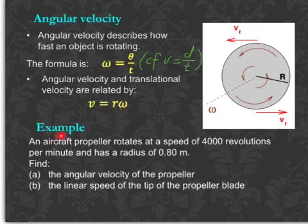Here we have an example where an aircraft propeller rotates at the speed of 4,000 revolutions per minute and has a radius of 0.8 meters.